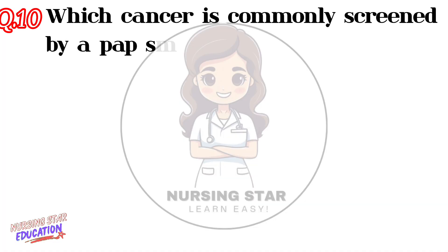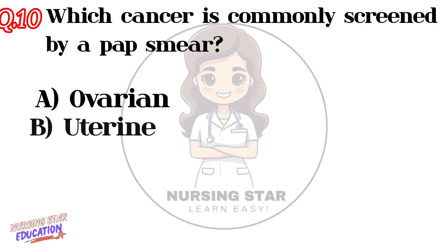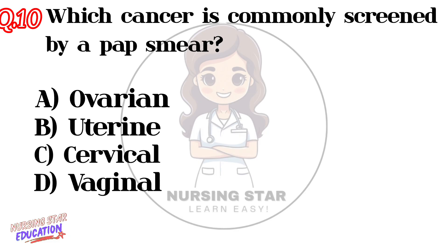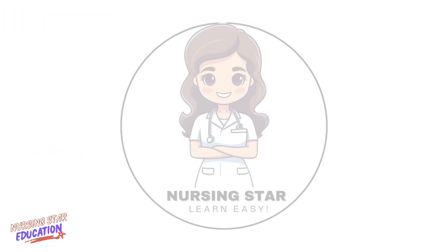Question number ten: Which cancer is commonly screened by a Pap smear? Option A: Ovarian. Option B: Uterine. Option C: Cervical. Option D: Vaginal. Correct answer: C — Cervical.